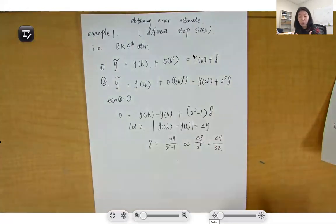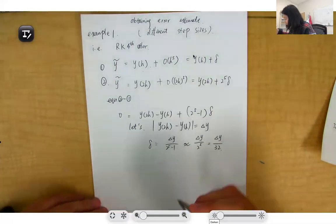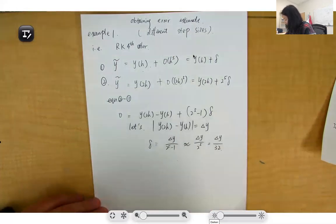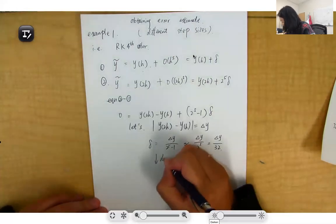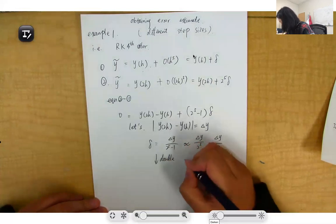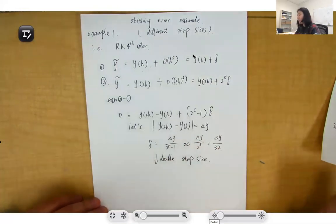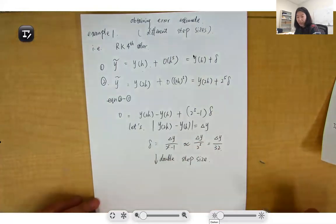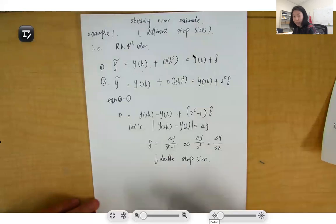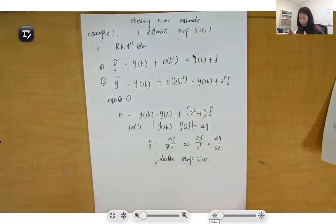Basically, you double the step size from h to 2h, and this leads to a truncation error. When you double the step size for the 2h part, you basically reduce the total size of your calculation from, for example, bound over h to bound over 2h.